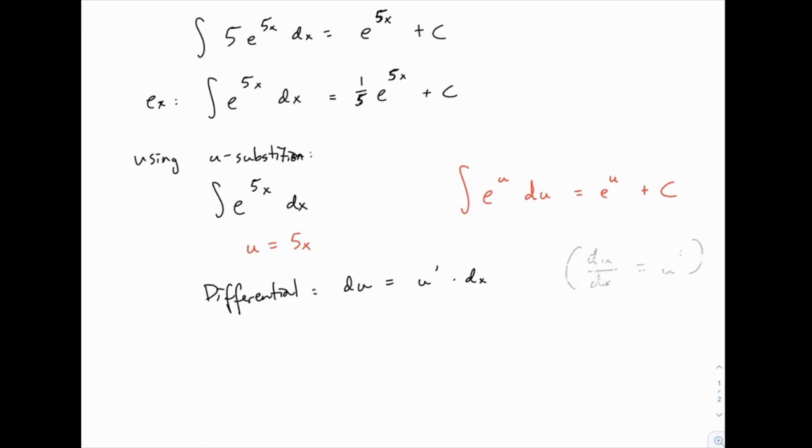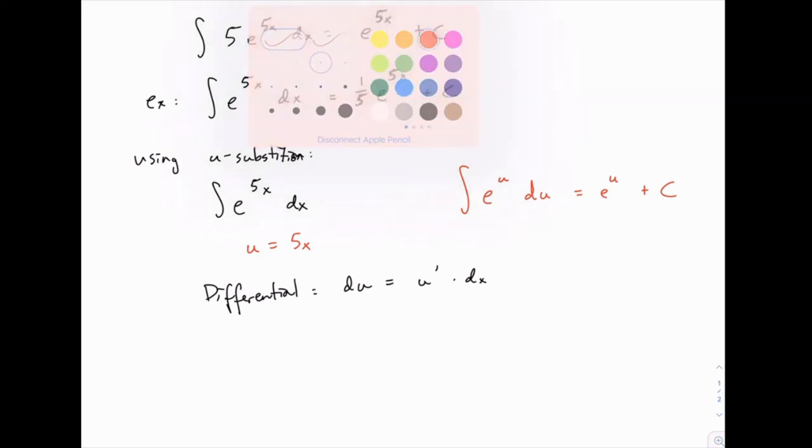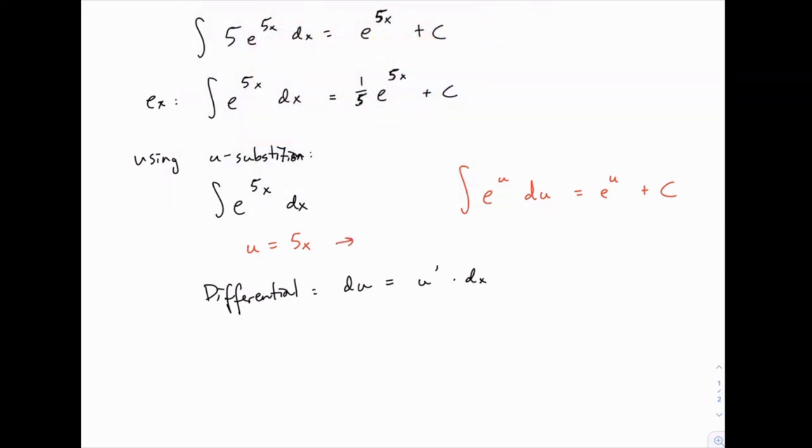Once you do a couple of these problems, it'll become second nature very quickly, that once you know what u is, du is just the derivative of that with dx tagged on. So in our example, if u is 5x, du would be the derivative of 5x, which is just 5, and then tag on dx.